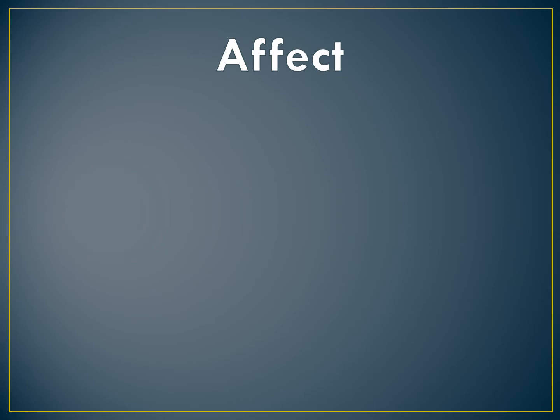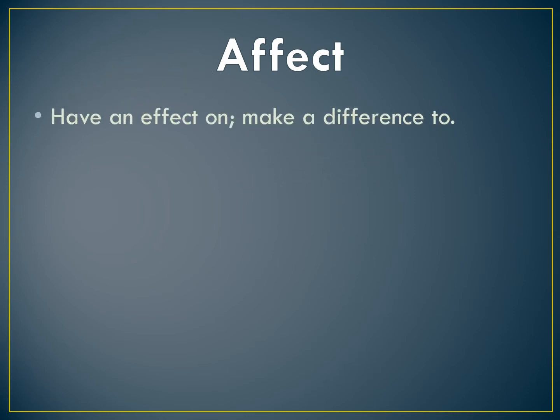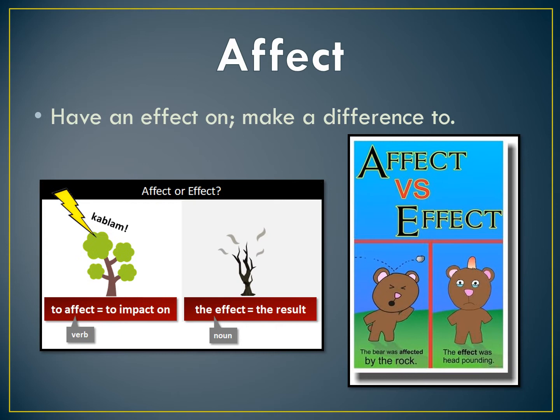The next word is effect. To have an effect on means to make a difference to. Some of you might get confused between 'effect' and 'affect.' To affect is a verb — to impact on. The lightning is impacting on the tree. The effect is a noun, which is the result: the tree is now dead. Another example: the bear was affected by the rock — the rock hit him, and the effect was head pounding. A bit confusing, but easy to understand once you practice a bit.